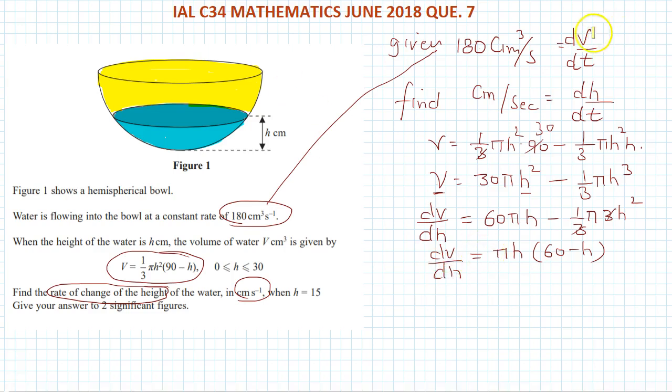So now we have dV over dt, dH over dt. dH over dt we have to find, and we have dV over dH. So we have to find dH over dt.